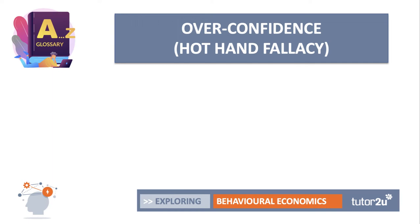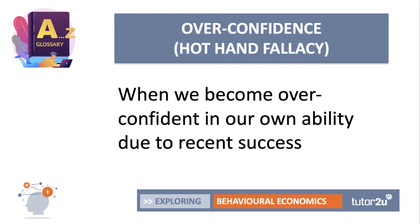Let's move on to overconfidence, another example of a cognitive bias. Overconfidence — sometimes called the hot hand fallacy — happens when we become overconfident in our own ability due to recent success. For example, a basketball player hits a bunch of three-point shots and thinks they're the world's best, or you pick some stocks that do well in the first few weeks and that increases your confidence as a stock picker. This can lead to quite significant behavioural problems, particularly in financial markets.